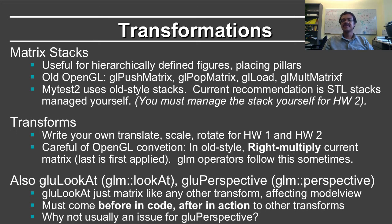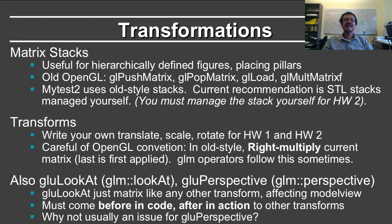gluLookAt, and its instantiation is glm lookAt, is just like a matrix in any other type of matrix. Like any other transform, it affects the model view matrix. Therefore, you specify it after you've specified the transforms to the objects. So in code, it comes first; in the actual operation, it comes last. The exact location of gluLookAt is not an issue for gluPerspective, because gluPerspective affects the projection matrix stack, which usually doesn't have anything else on it, while gluLookAt affects the model view matrix that has camera positioning but also has object motion.